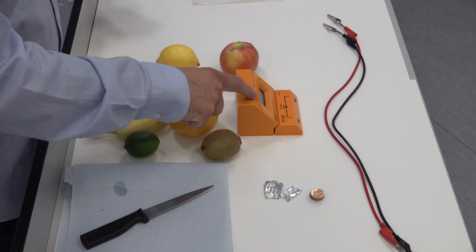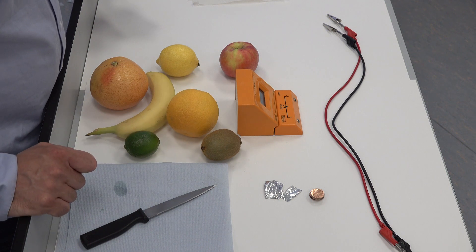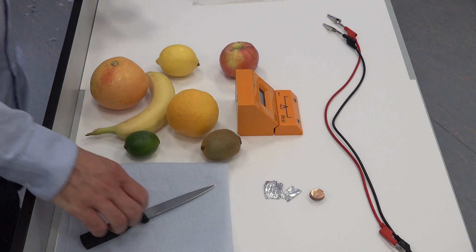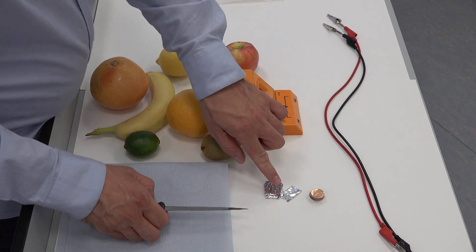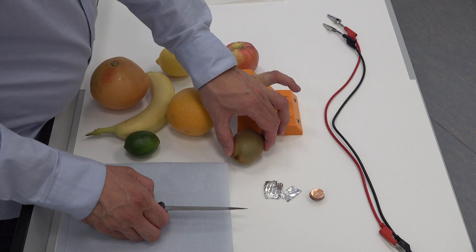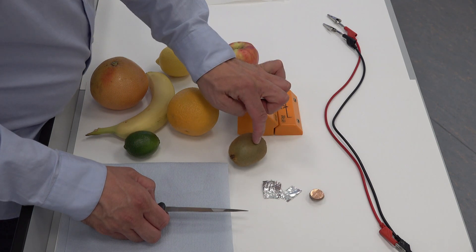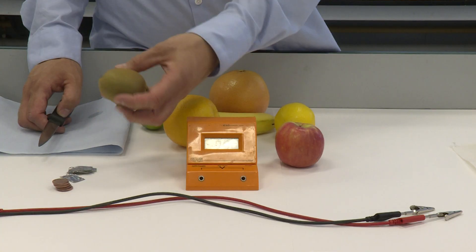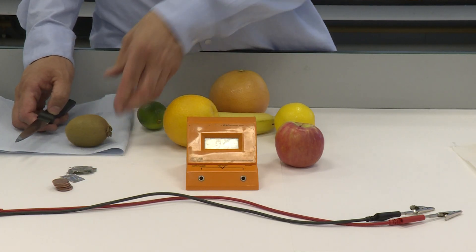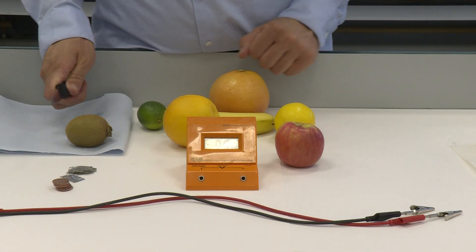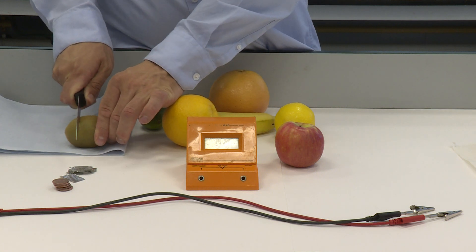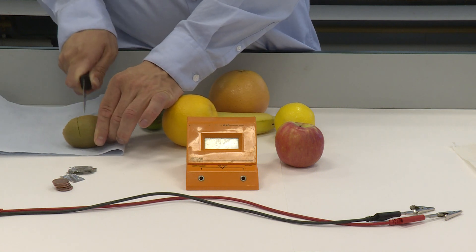The next stage is to put some holes in the fruit in order to put the aluminum foil and the copper coin into the fruit. To begin with, we make sure it's on a nice flat surface. We use a good quality knife and we make two small cuts into the flesh of the fruit. Be careful with your fingers, please.